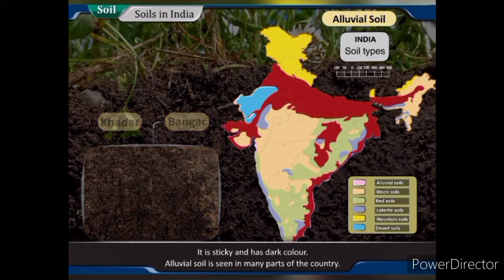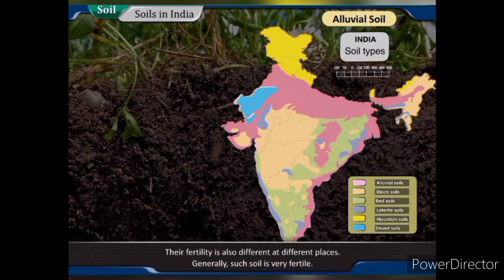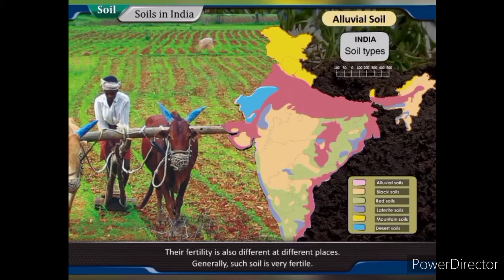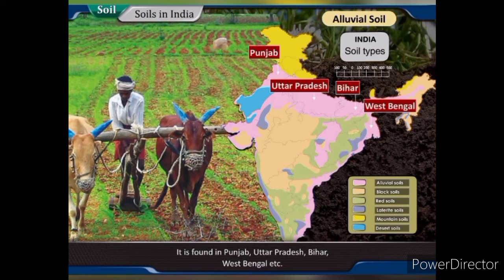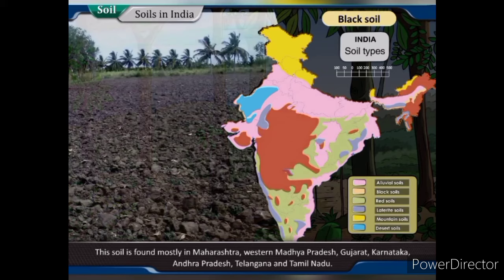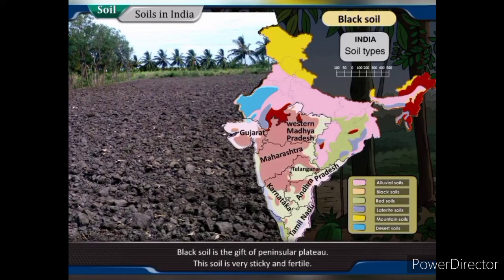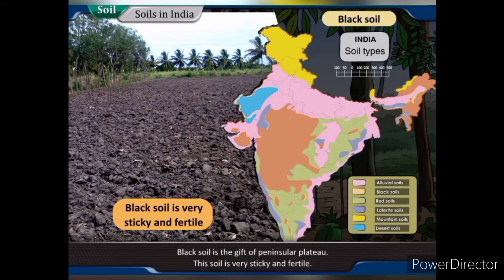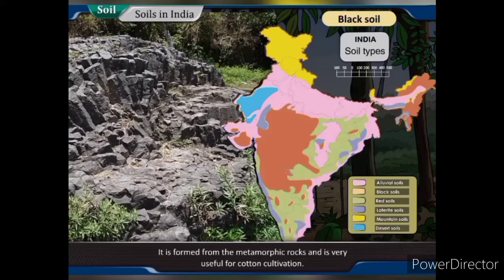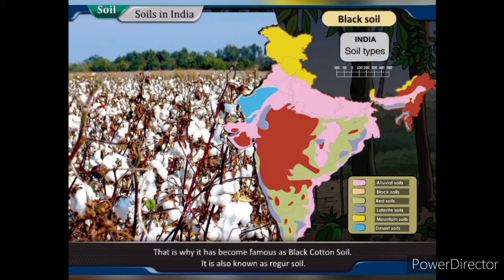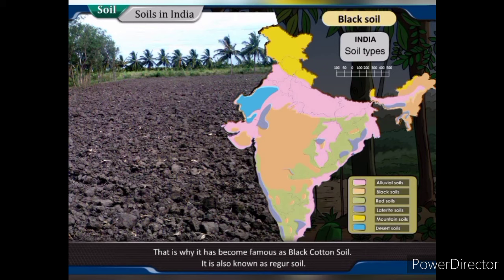Alluvial soil is seen in many parts of the country with varying fertility, though generally it is very fertile. It is found in Punjab, Uttar Pradesh, Bihar, West Bengal, etc. Black soil is found mostly in Maharashtra, Western Madhya Pradesh, Gujarat, Karnataka, Andhra Pradesh, Telangana and Tamil Nadu. Black soil is the gift of the peninsular plateau — it is very sticky and fertile, can retain humidity for a prolonged time, and is formed from metamorphic rocks. It is very useful for cotton cultivation, which is why it is also known as black cotton soil or Regur soil.